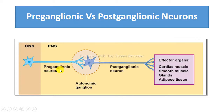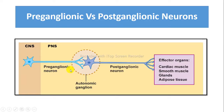The axons of preganglionic neurons are myelinated and are type B fibres, whereas axons of postganglionic neurons are unmyelinated and are of type C fibres. These postganglionic axons terminate in visceral effector organs, for example smooth muscle, cardiac muscle, and glands.